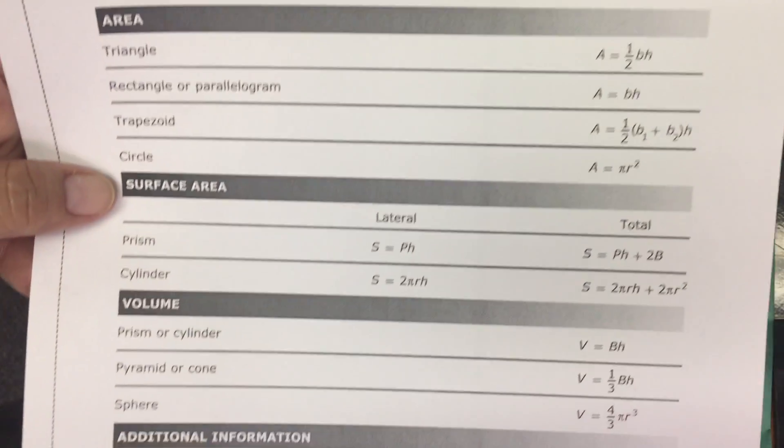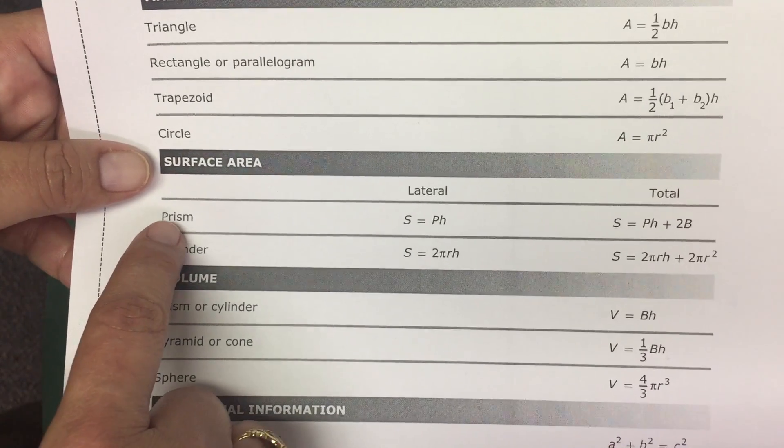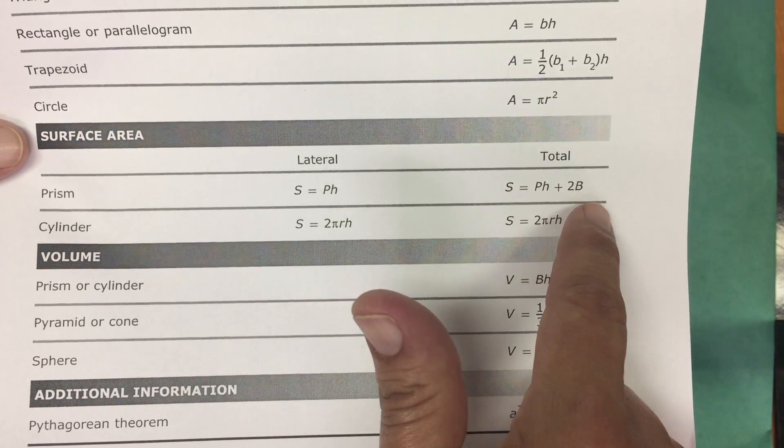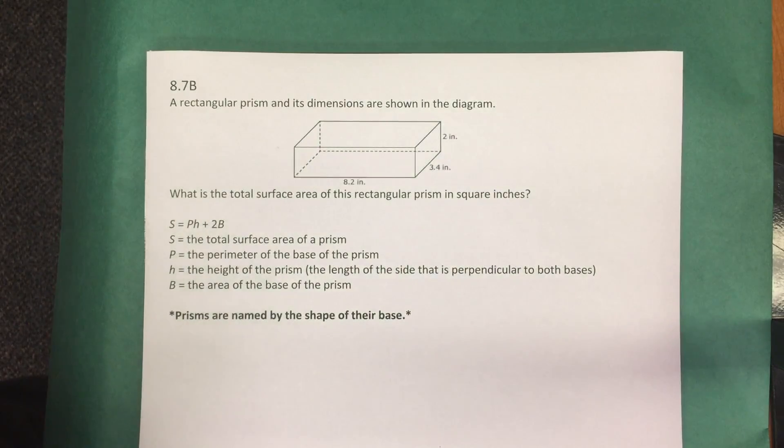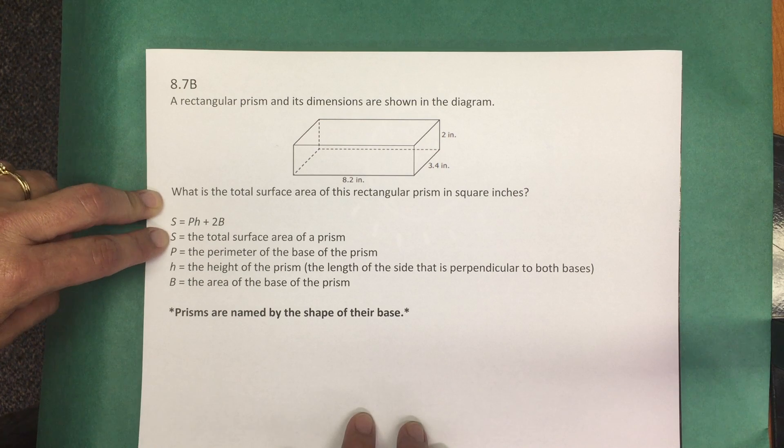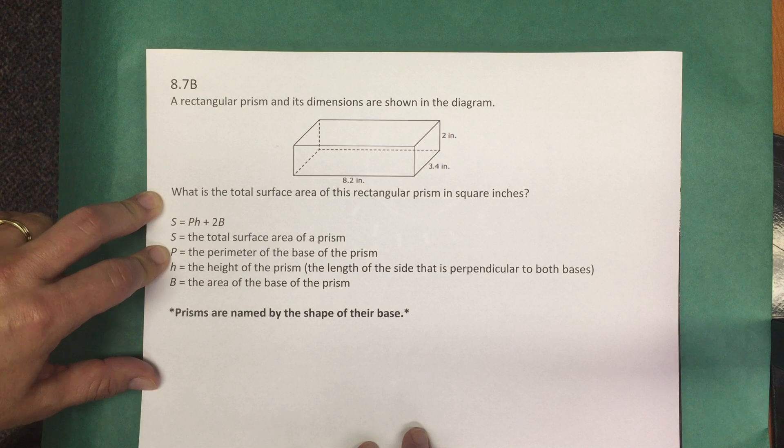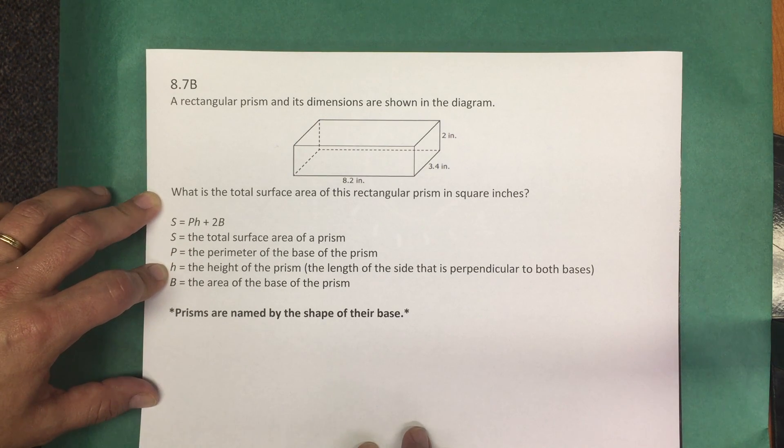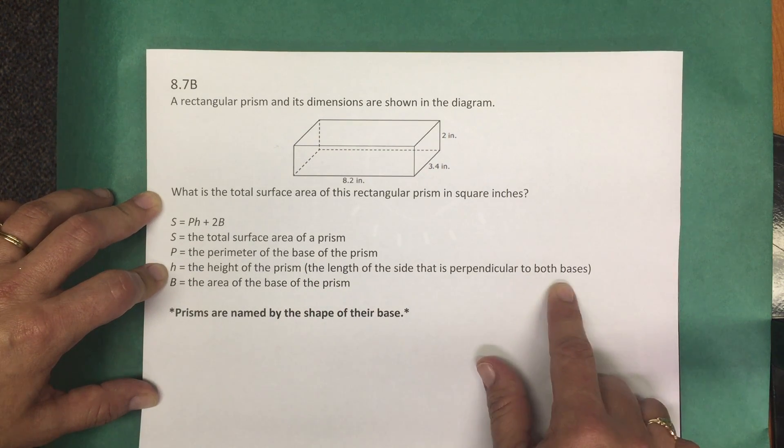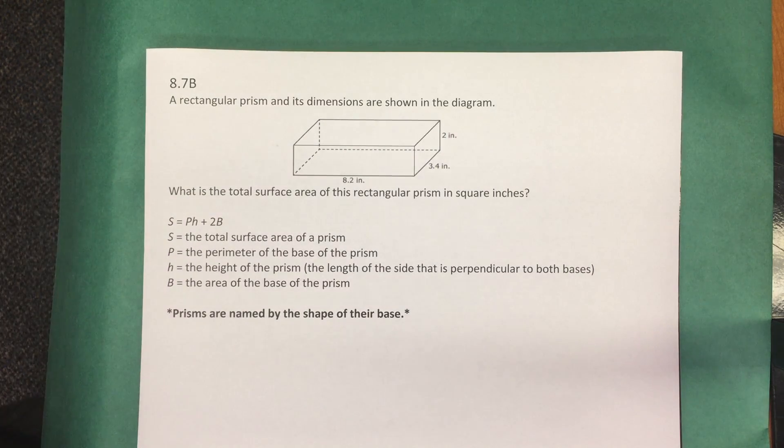Referencing our sheet to define the formula, let's look for the total surface area for a prism. The formula is S equals Ph plus 2B. Let's look at each of those variables and identify what they represent. S is the total surface area of the prism. Capital P is the perimeter of the base of the prism. h is the height of the prism, and just a reminder that the height is the length of the side that is perpendicular to both bases. And capital B is the area of the base of the prism.